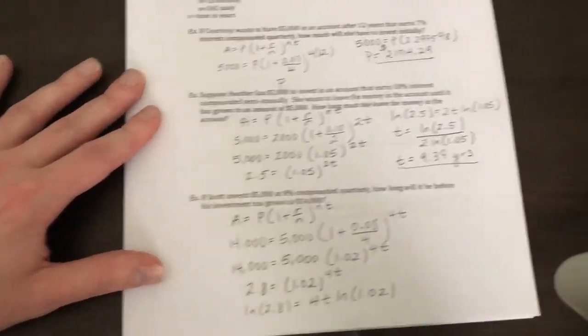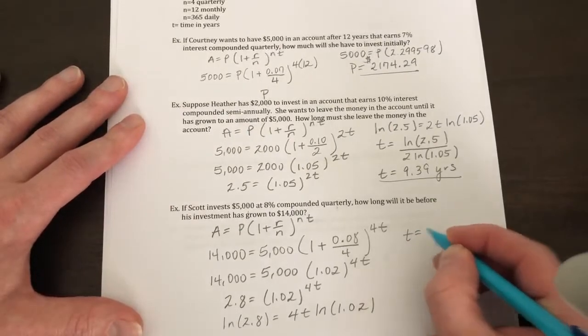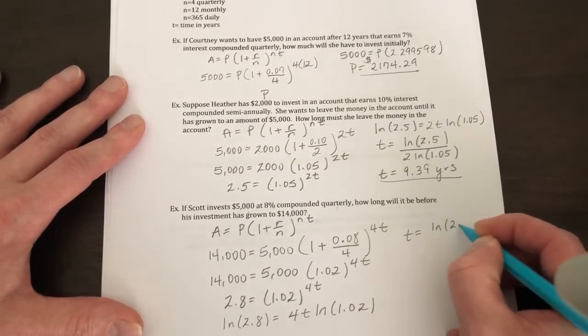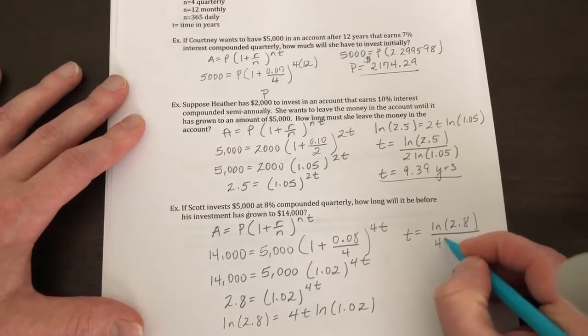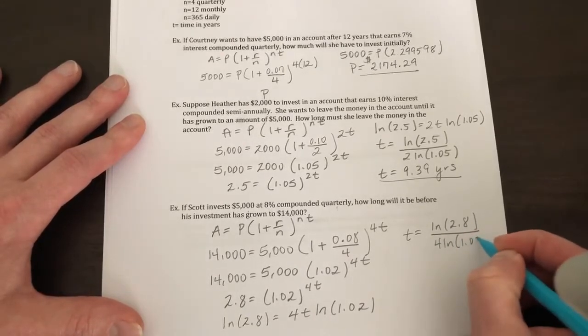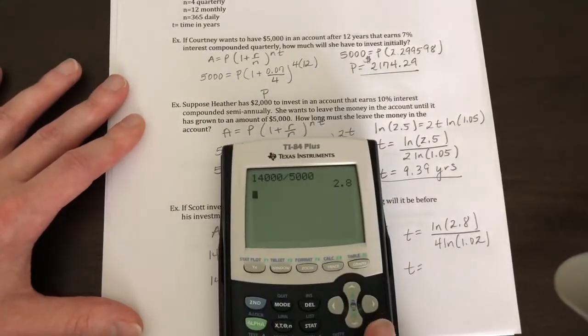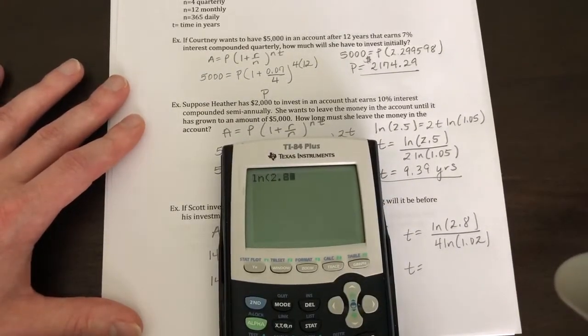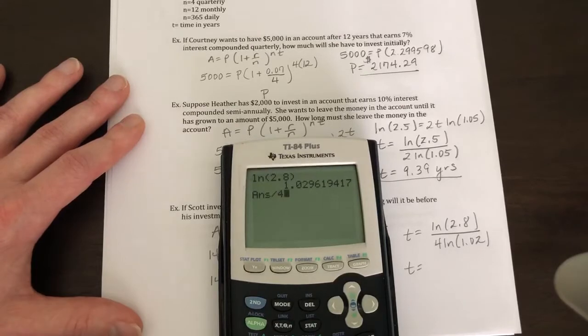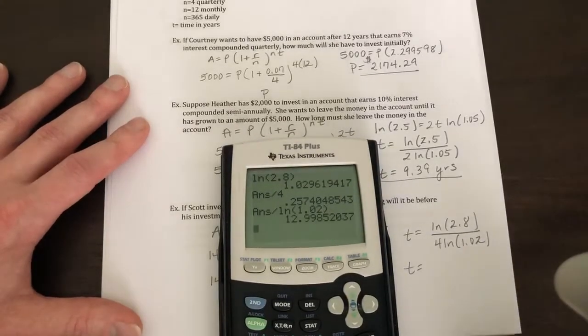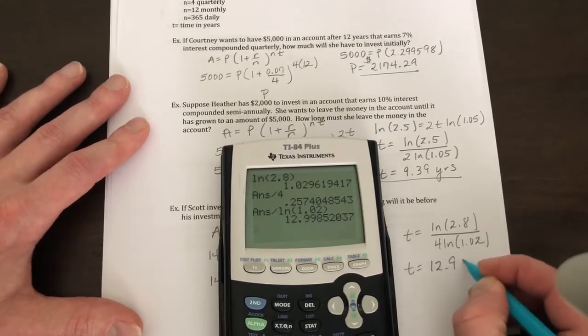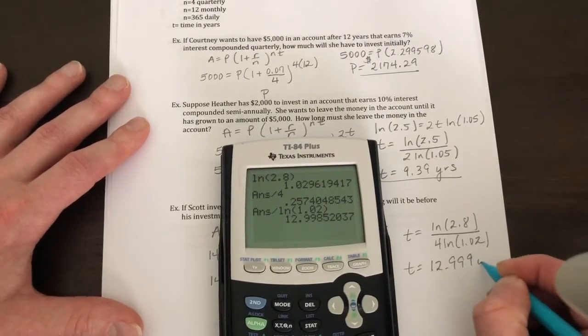And then we're going to natural log both sides to solve for T. Then T is going to be equal to ln(2.8) divided by 4 ln(1.02). So natural log of 2.8 divided by 4 divided by natural log of 1.02. I get 12.999 years.